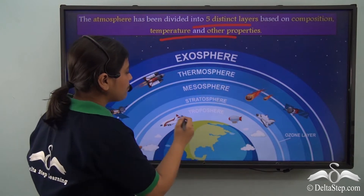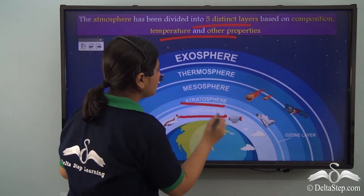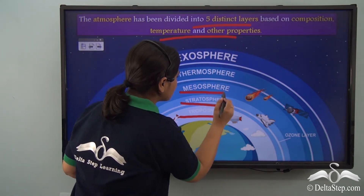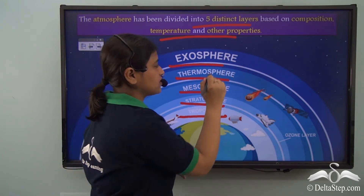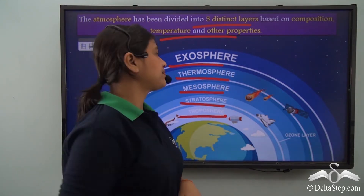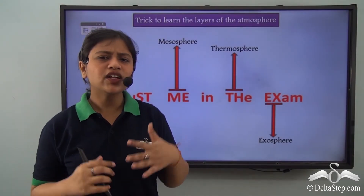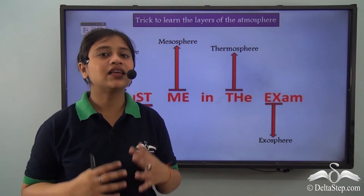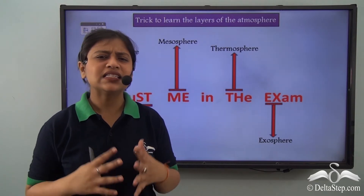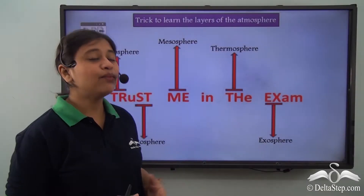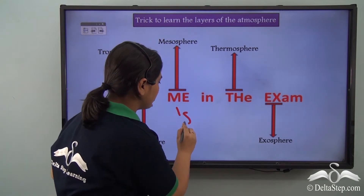They are the troposphere, stratosphere, mesosphere, thermosphere and exosphere. Now, the name of the layers are very similar because all of them end with the word sphere.